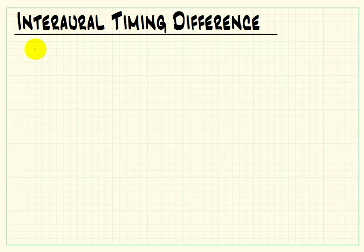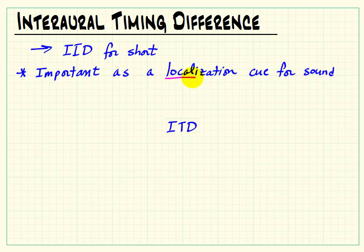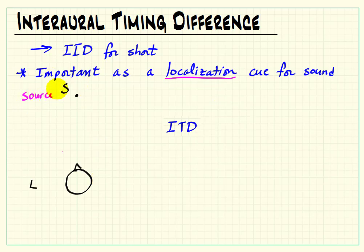Let's consider an important localization cue known as interaural timing difference, or ITD for short. This is one of the important ways that human perception works for localizing a source based on listening with both ears. Let me consider a listener from the top view.